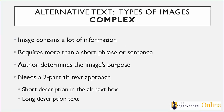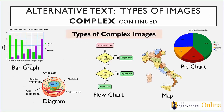The next type of image is the complex image. These are images that have a lot of information — typically an image with many different parts to it, like a map, graph, or similar, where it's going to take a lot to describe. You're going to need more than a short phrase or sentence to adequately describe what's going on. For complex images, you need to approach it with a two-part alt text approach: still put a short description in the alt text box, but also include a long description of that image.